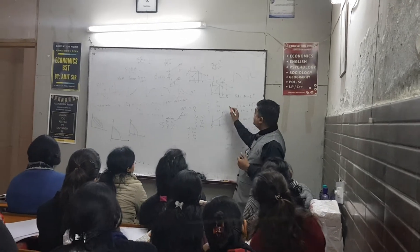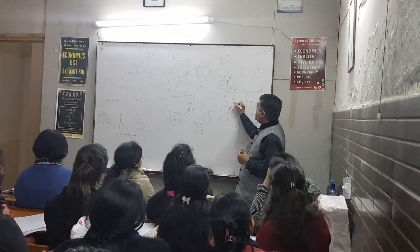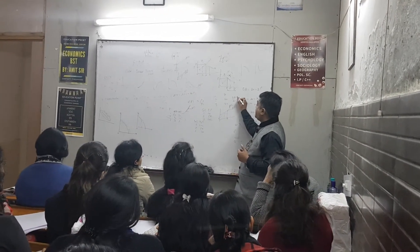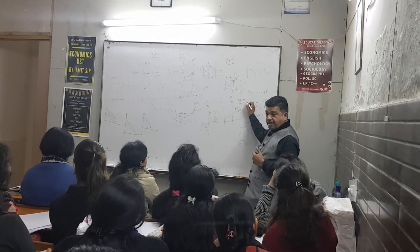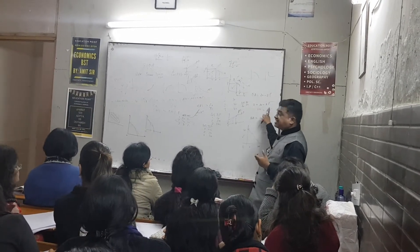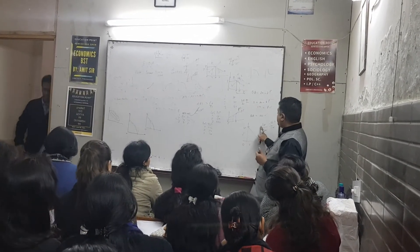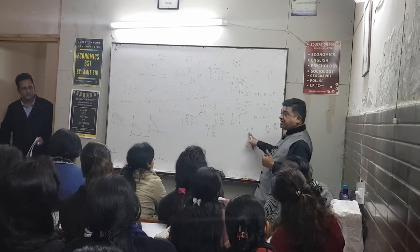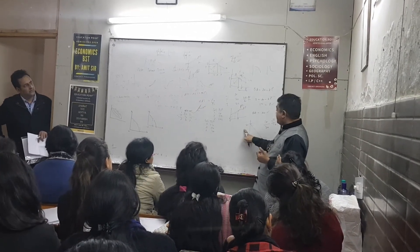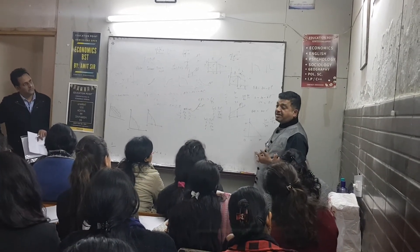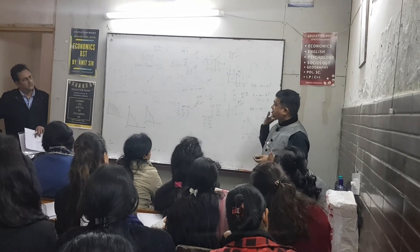1 by 2, because that will be dq upon dp — but slope is dp upon dq, right. So just put one thing at a time. You will get two points: 10 on the price axis, 20 here. So perpendicular upon base — 10 upon 20 — that will be the slope.